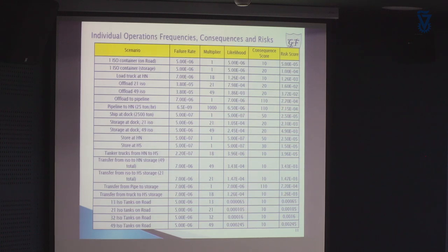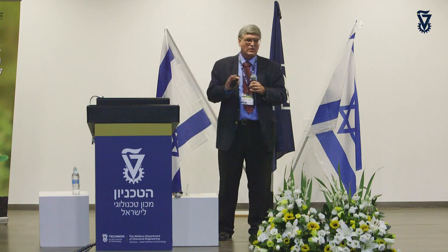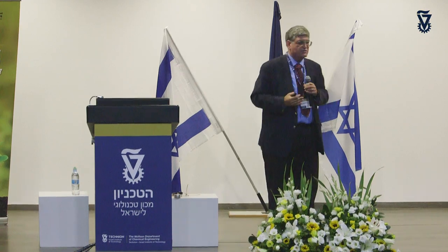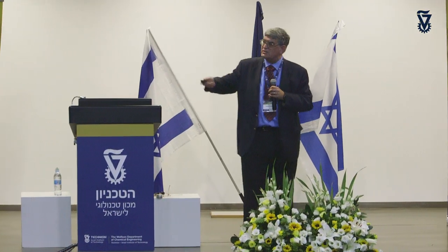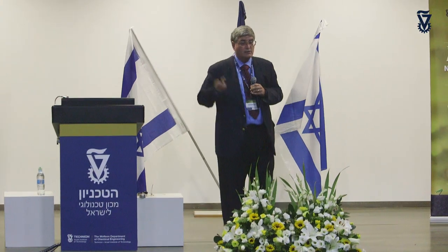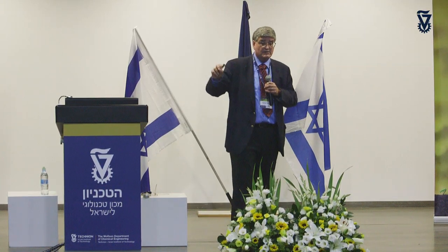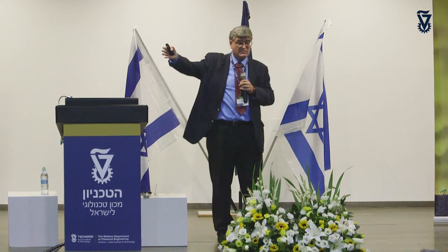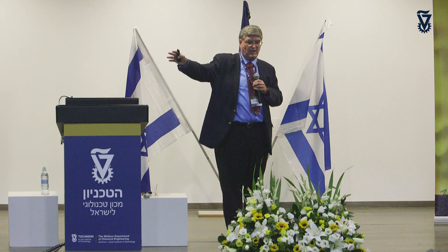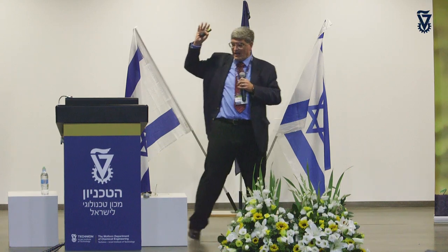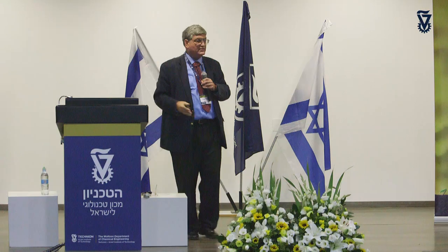In looking at all of the scenarios, we had some 90 separate operations. For the main ones we're focusing on — which are isotanks — these are the primary operations we're looking at. This is basically how we calculate the failure rate from the HSE report, multiply it by how many operations we're using for that particular failure rate, calculate the likelihood, compute consequences from SCIPUFF, multiply them together, and we get our risk score for that particular operation.